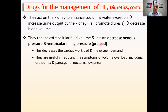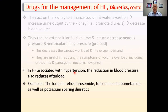When you decrease the preload, this decreases the cardiac workload and oxygen demand. They are also useful in reducing symptoms of volume overload, including pulmonary congestion, specifically orthopnea — the shortness of breath when the patient is lying flat — and paroxysmal nocturnal dyspnea, which occurs during the night. In heart failure with hypertension, the reduction in blood pressure can decrease the afterload, because there is less blood to push, so the heart can pump more easily.